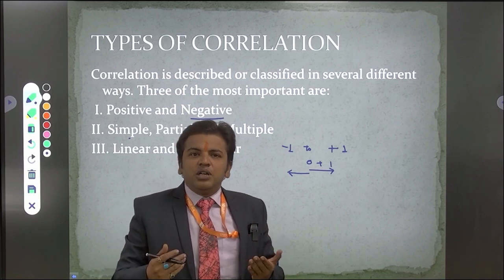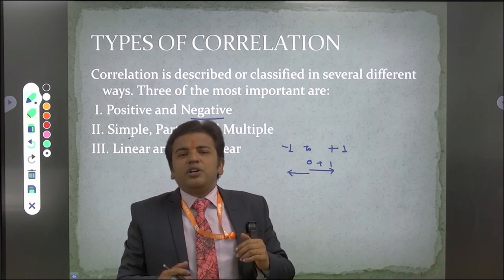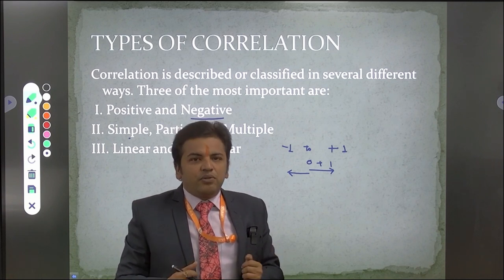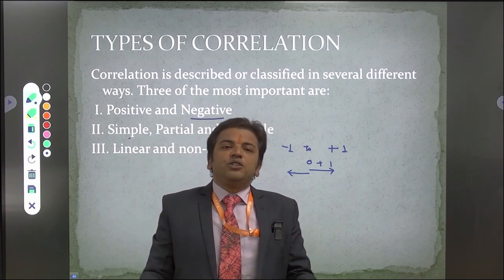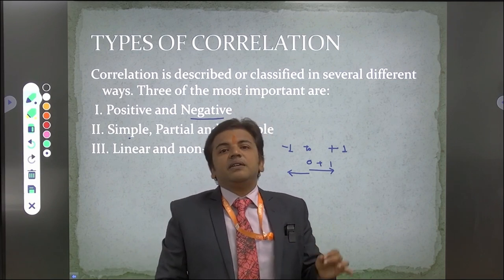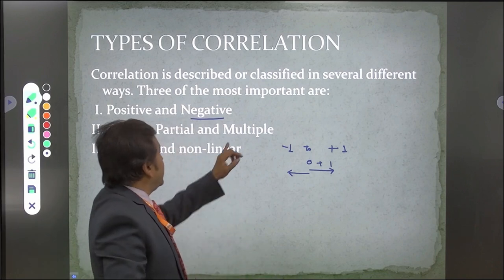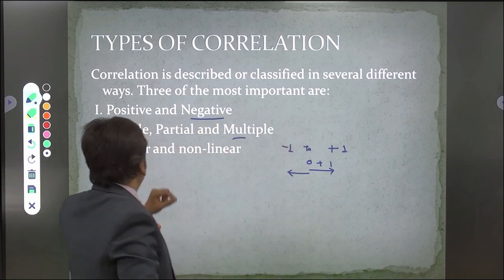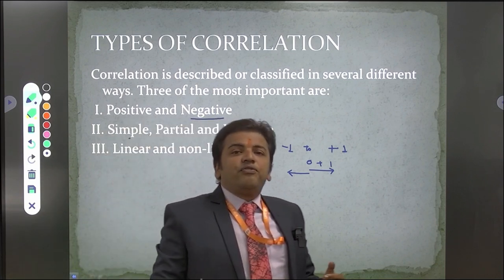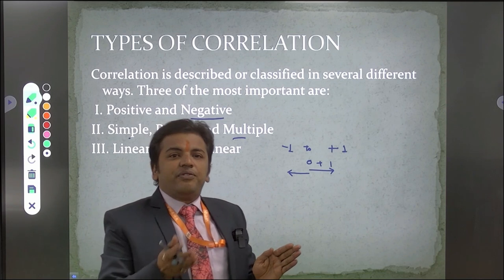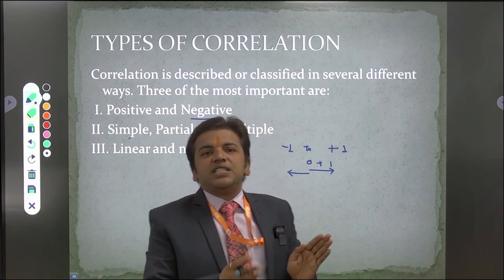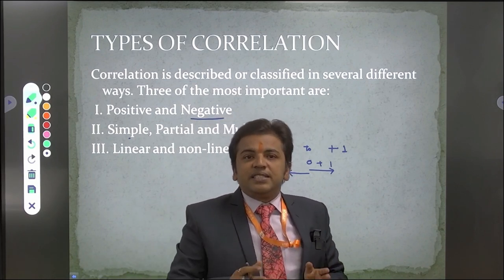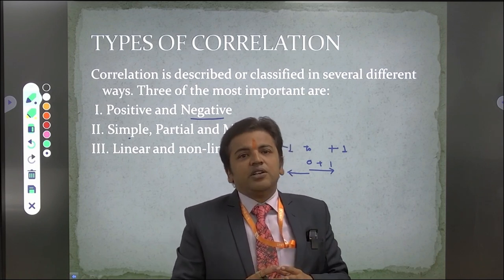Simple correlation is when we correlate two values. Partial correlation means the impact of one series on the other is partially affected. Multiple correlation means we are relating X series and Y series, but there is also an impact of a Z series. The third type is linear and nonlinear correlation. When the value of one series lies in line with the value of the other series, we say it is a linear correlation. When the two series are not in the same line, we say it is nonlinear or curvilinear correlation.